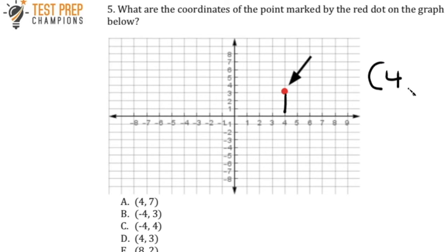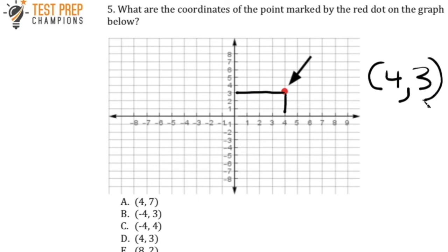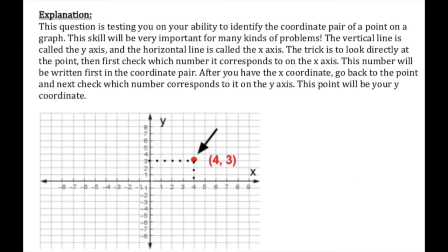In any coordinate pair, you always write the x-coordinate first. Now we can take the dot and trace over towards the y-axis, and we keep going until we hit our y-axis, and we hit the y-axis at three. So we always write the y-coordinate second. So again, x is four, y is three, and D is the correct answer here.